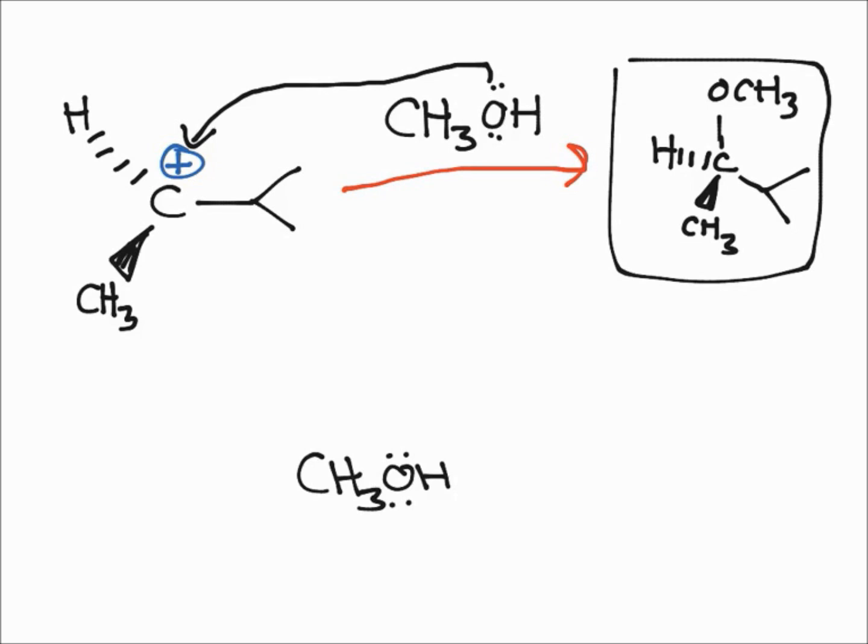We have this as our final product of the SN1 reaction. Let's give it a configuration, R or S, because obviously this carbon is chiral. We're going to rank them 1, 2, 3. The hydrogen's pointing in the back, the fourth group. So this is clockwise. This would be designated as an R.